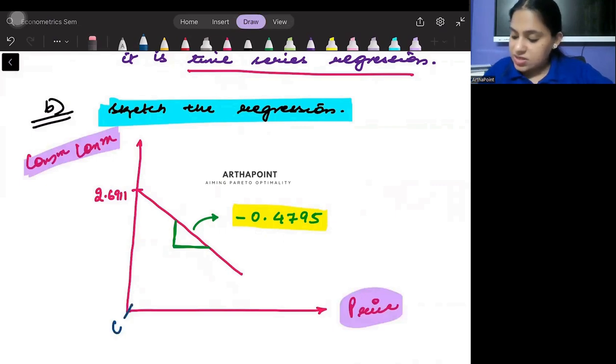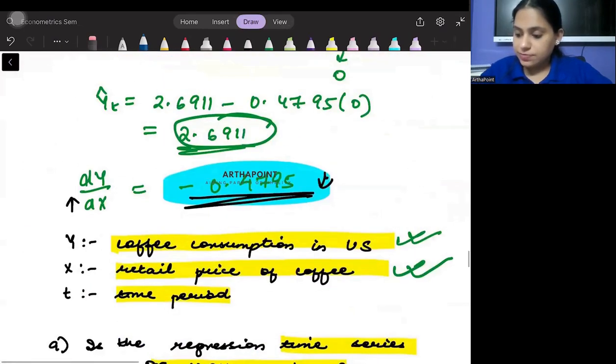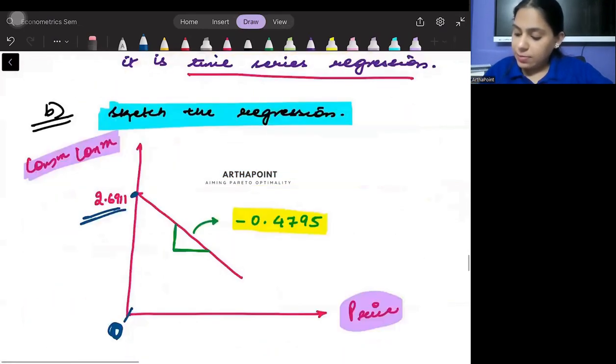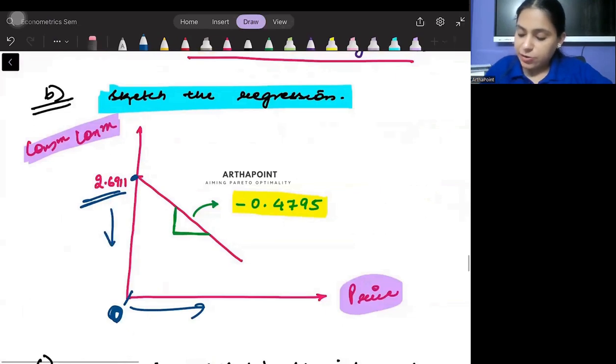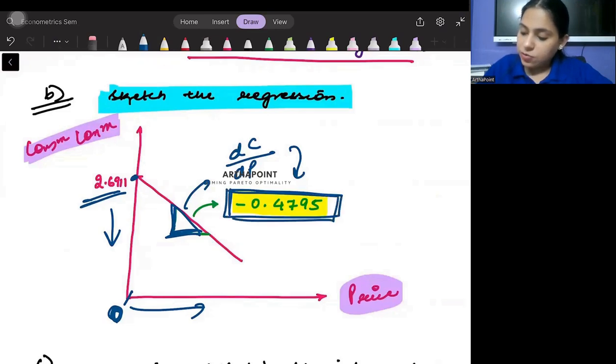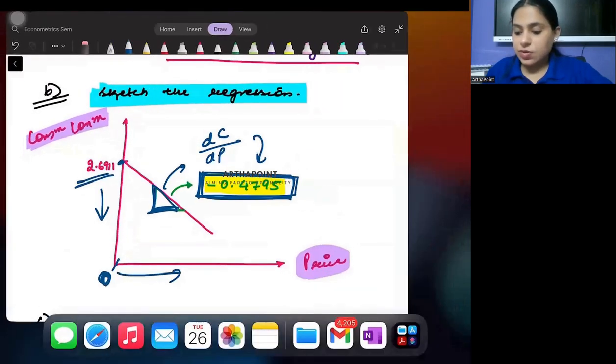So when my price is 0, then I am consuming 2.6911 units of coffee. And then when my price increases, the demand for coffee is decreasing. This is the slope, reflecting how coffee consumption changes when price changes, and this is minus 0.4795.